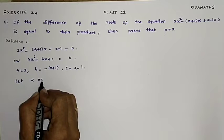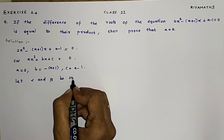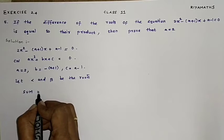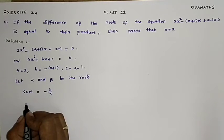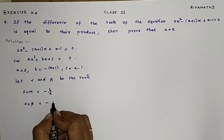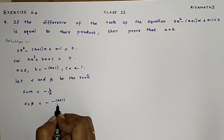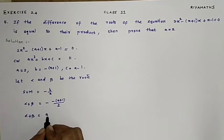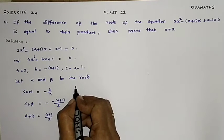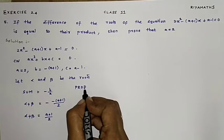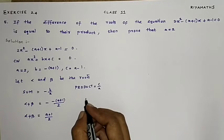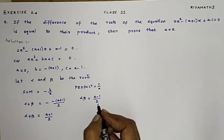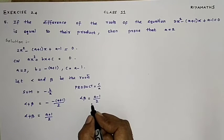Let alpha and beta be the roots. The sum of roots is given by the formula minus B by A, so alpha plus beta equals minus of minus(a+1) divided by 2, which gives (a+1)/2. Next, the product of roots is C by A, so alpha times beta equals (a-1)/2.